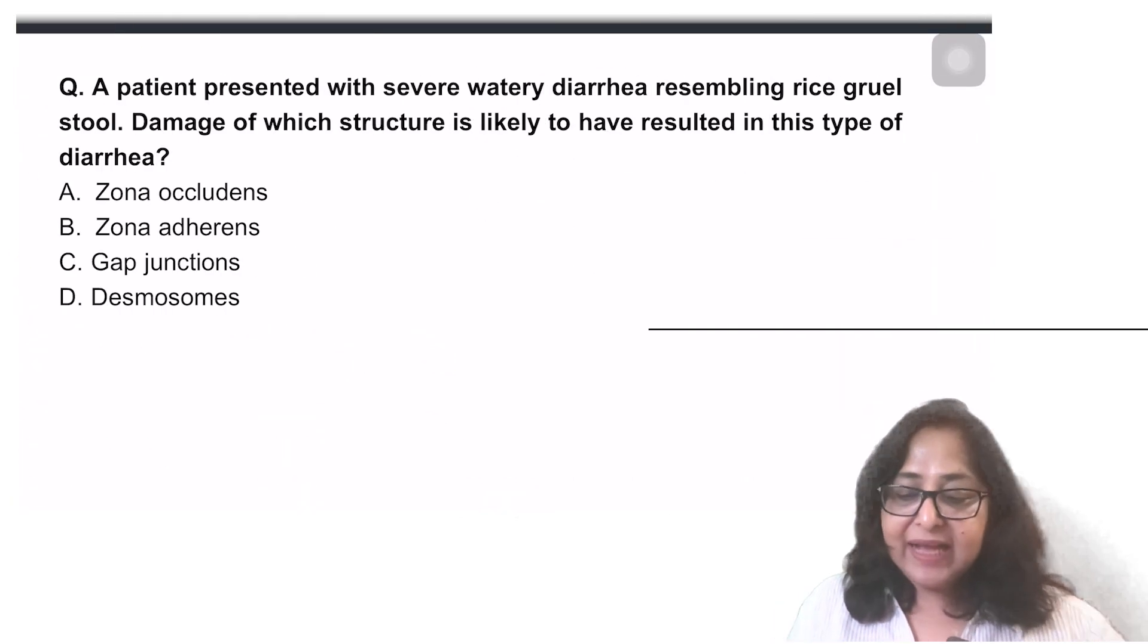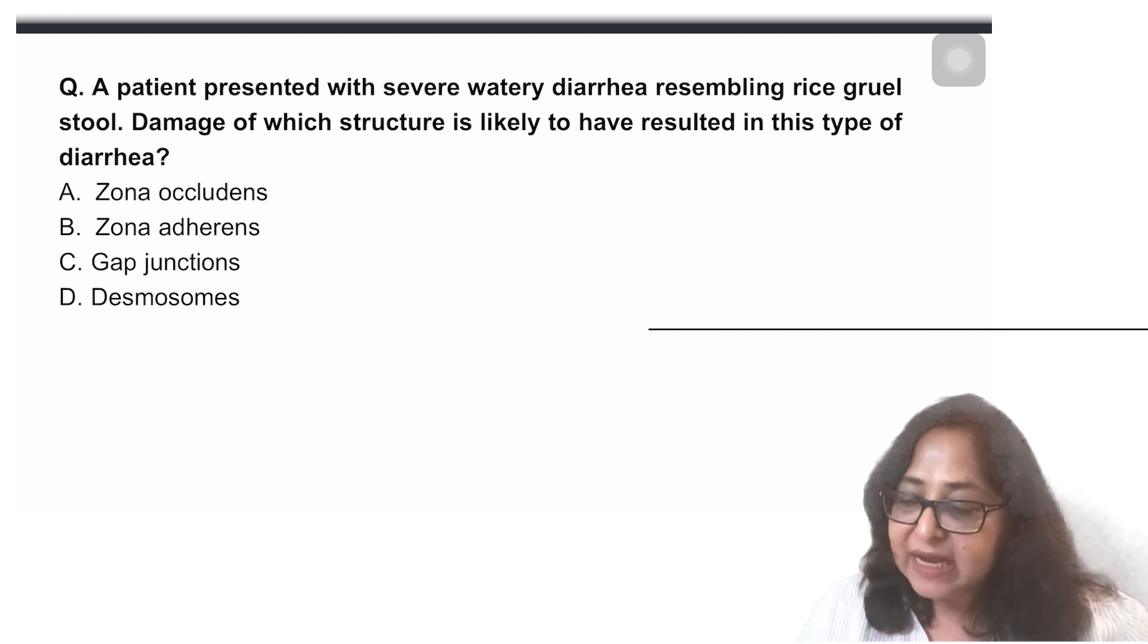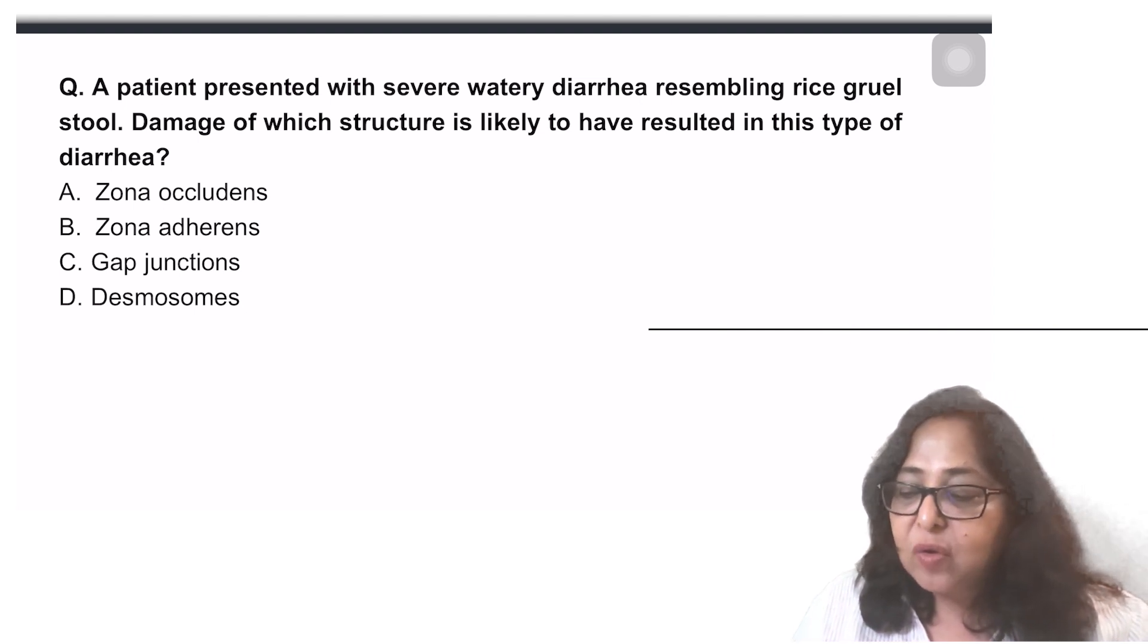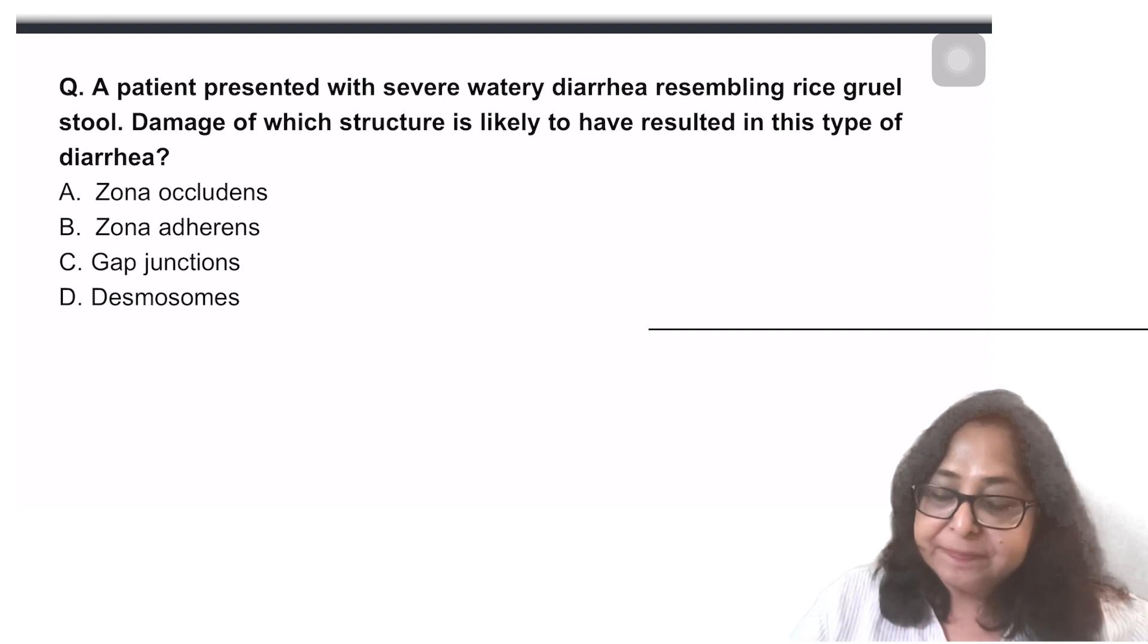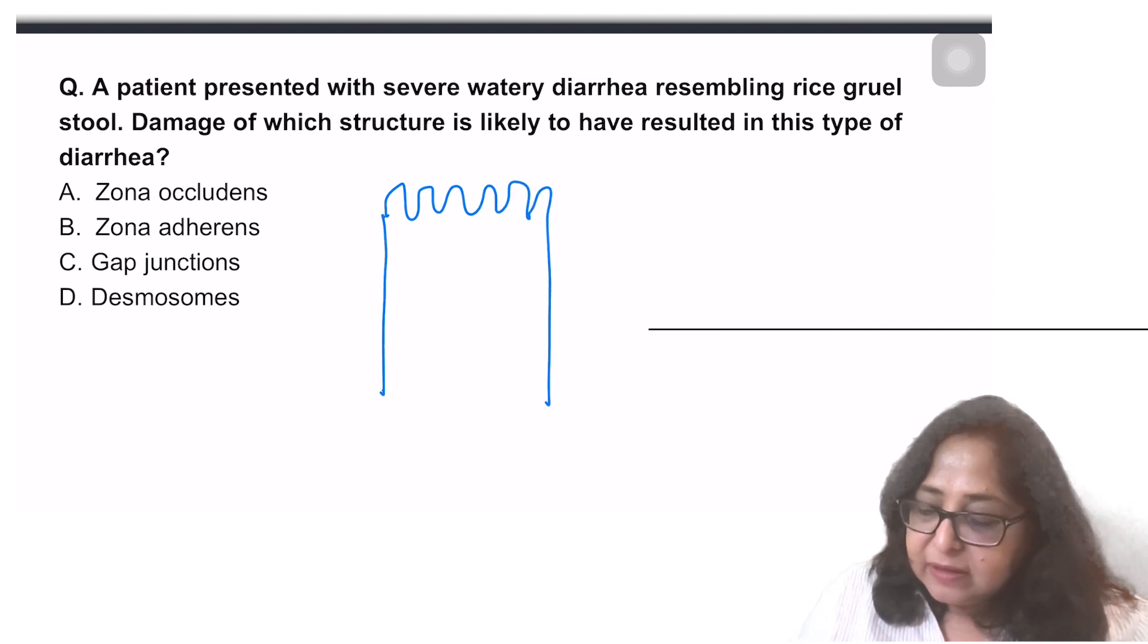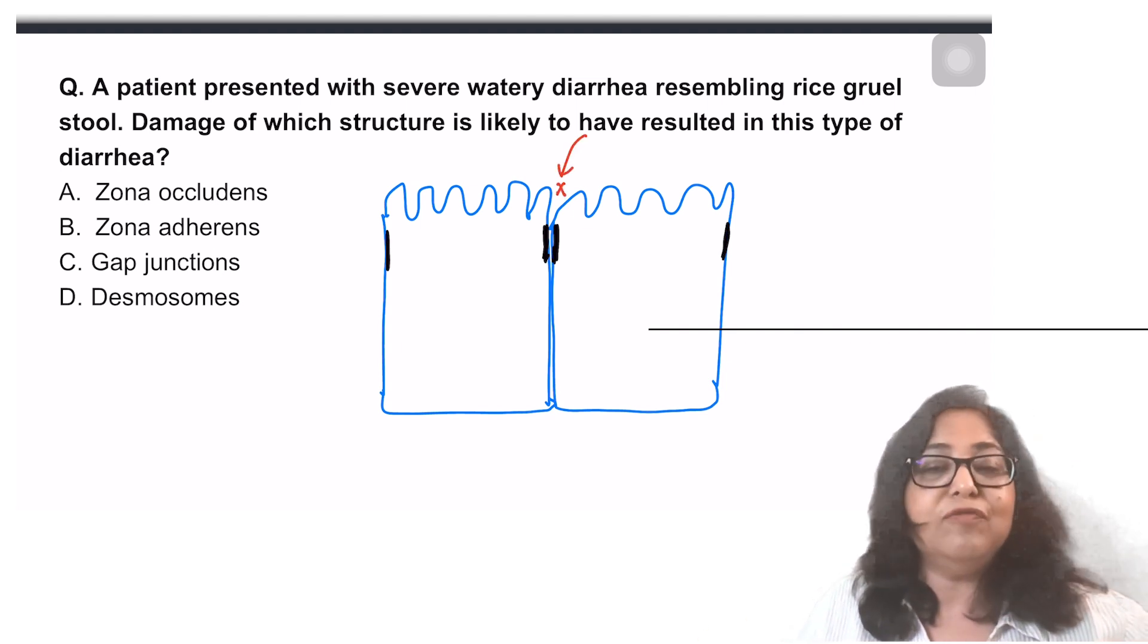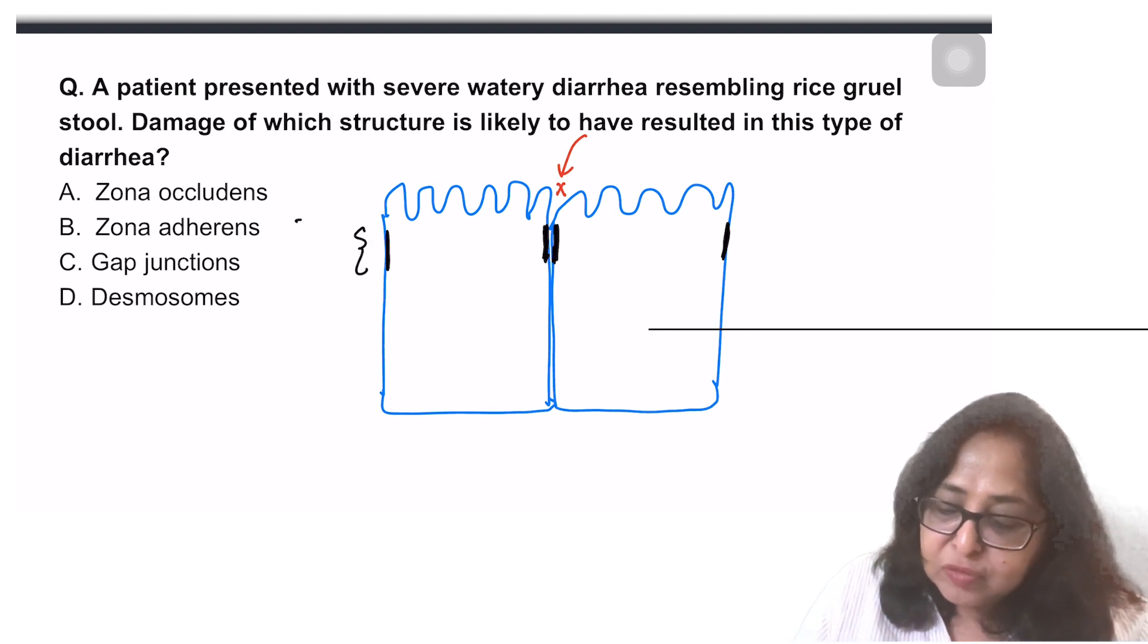Let's have a look at this question. A patient presented with severe watery diarrhea resembling rice water stools. Damage to which structure is likely to have caused or resulted in this type of diarrhea? When I look at the enterocytes, towards the lumen, the enterocytes have something known as, they are bound by something known as tight junctions. There are tight junctions towards the luminal side and that prevents a paracellular movement of substances. These tight junctions form what is known as the zonula occludens. This is formed by the tight junctions.